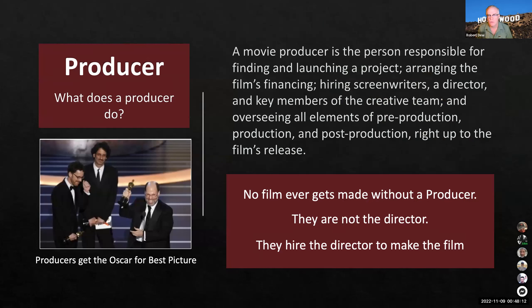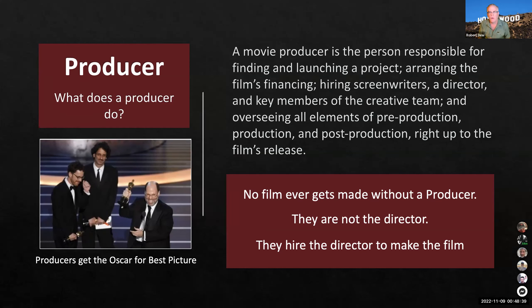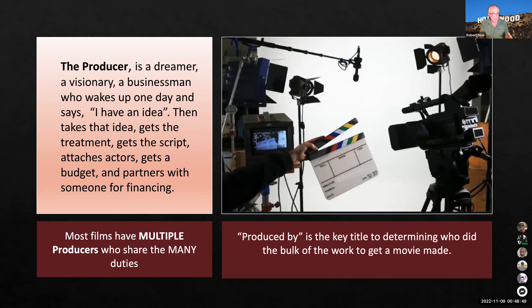What does a producer do? A movie producer is the person responsible for finding and launching a project, arranging the film's financing, hiring screenwriters, a director, and key members of the creative team — essentially overseeing all elements of pre-production, production, and post-production right up to the film's release. No film ever gets made without a producer. They're not the director; they hire the director to make the film. The producer is a dreamer, a visionary, a businessman who wakes up one day with an idea, gets a treatment, gets a script, and so on.